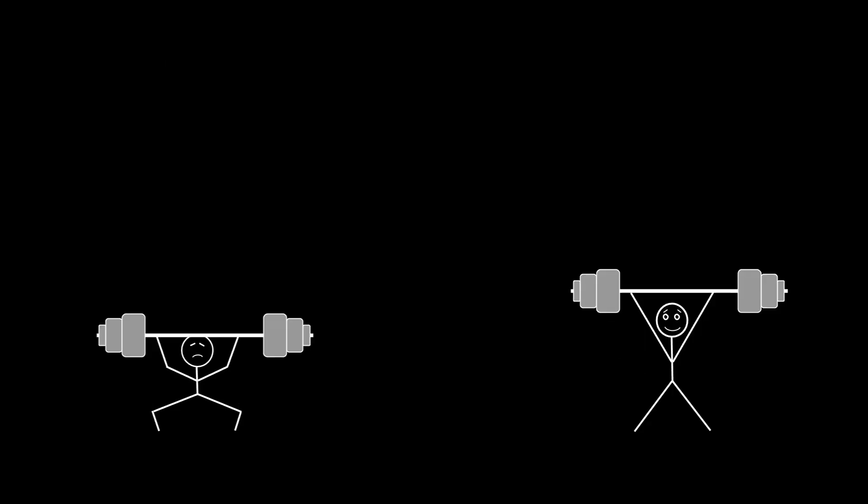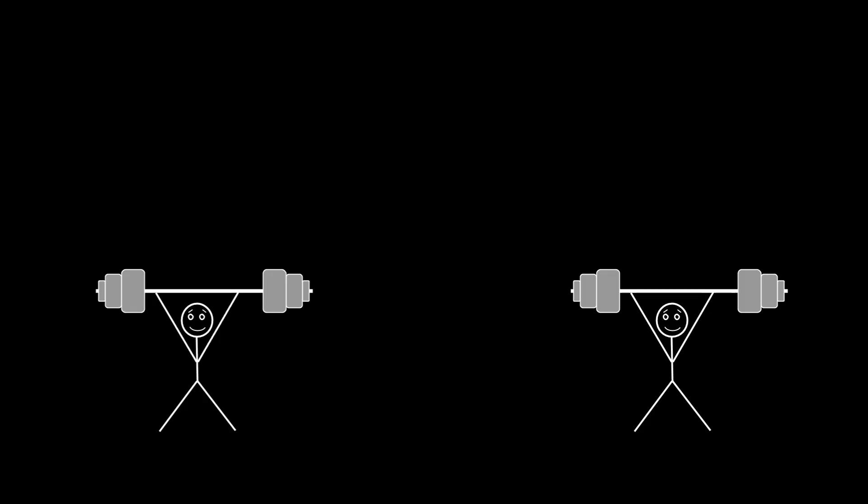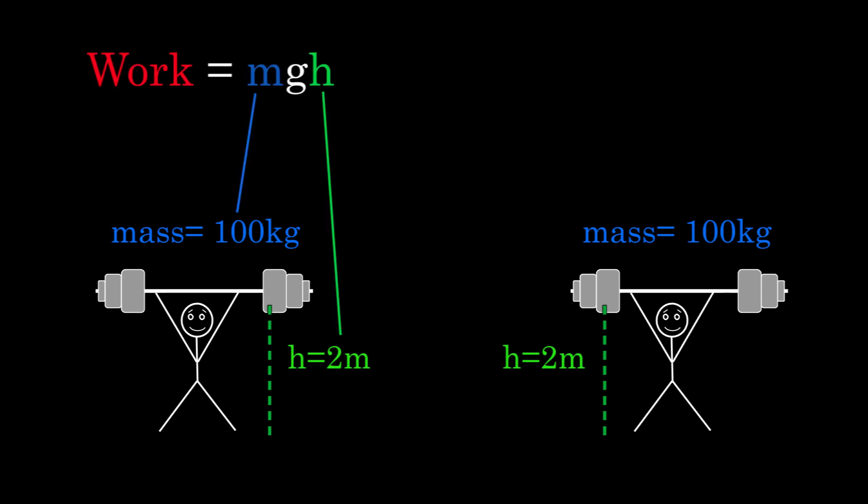Both weightlifters are giving their weights the same amount of gravitational potential energy. They both lift them 2 meters and the masses are 100 kilograms each. Plug those into the formula for gravitational potential energy and you find that the work done by each weightlifter is 1,960 joules.